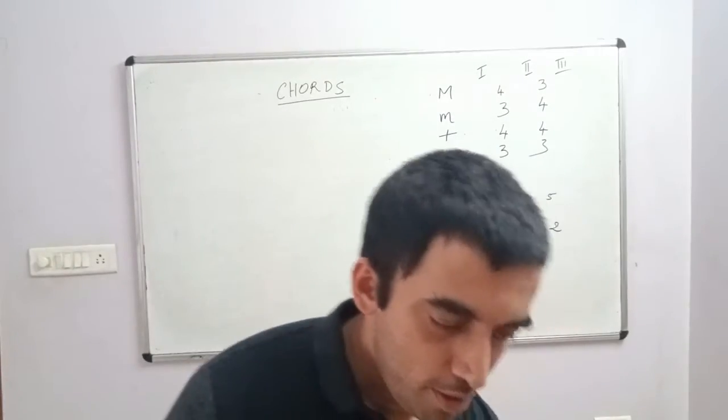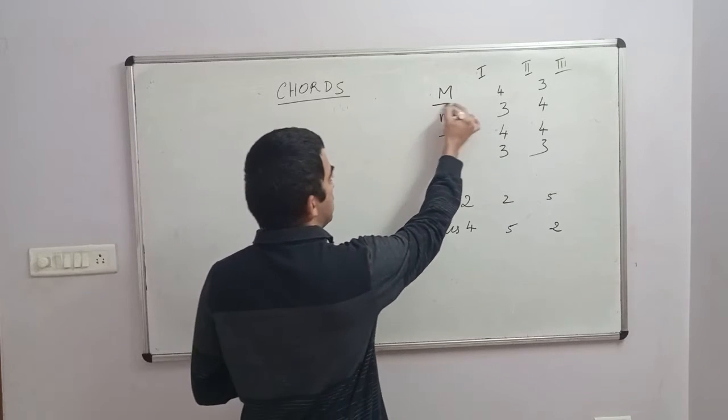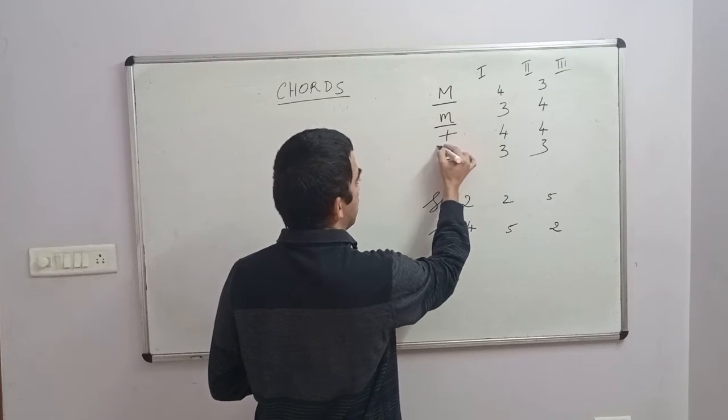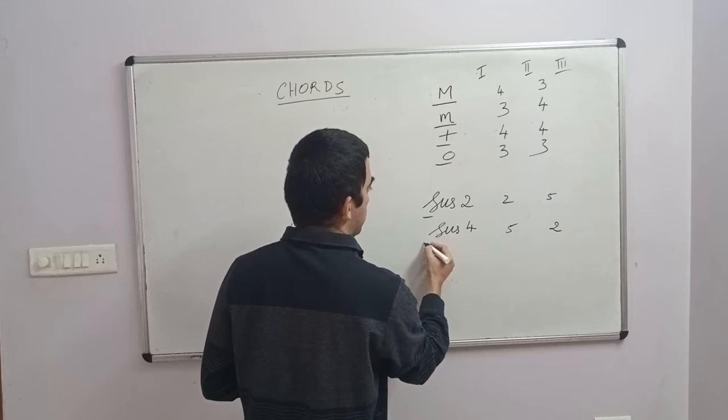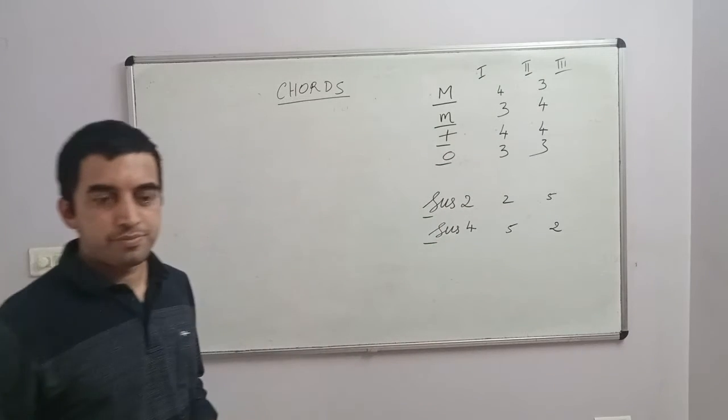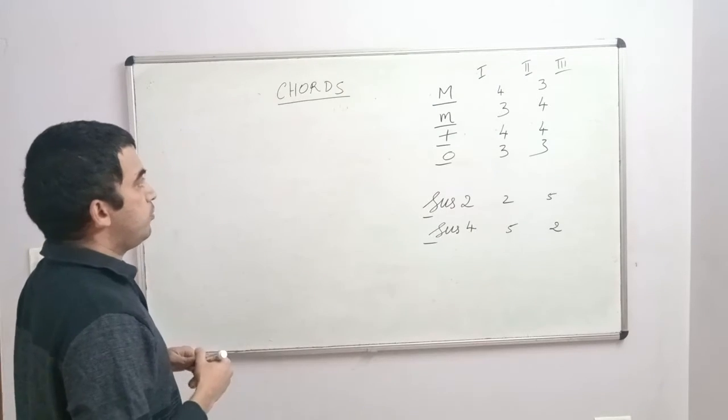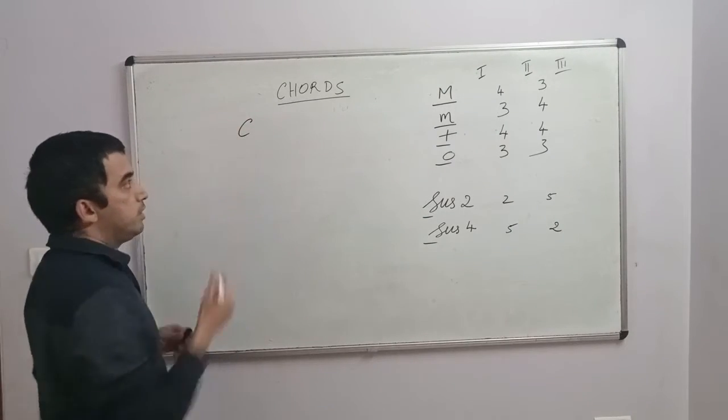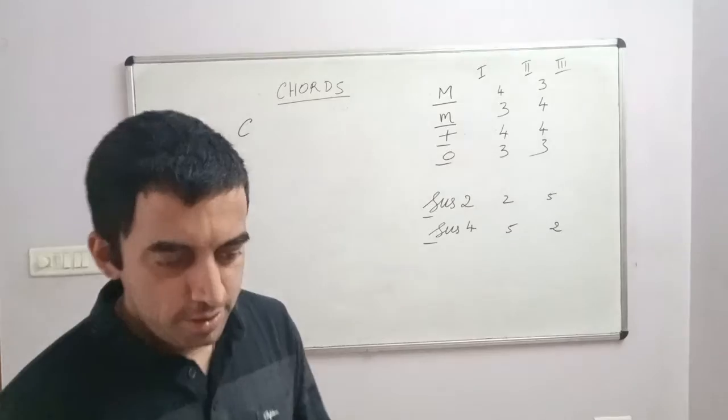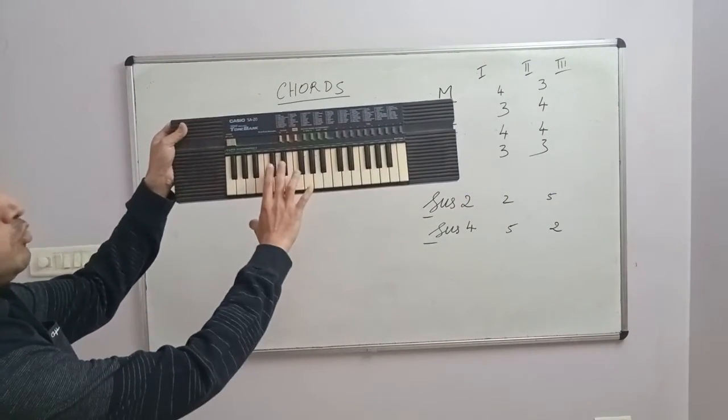All right, so now we have finished major chords, minor chords, augmented, diminished. Now we come to the sus2 and the sus4. Okay, just to go back and see how the chord sounds, imagine you see a C major chord.